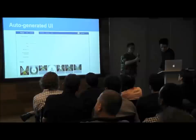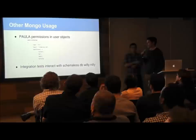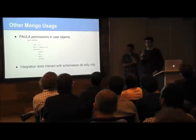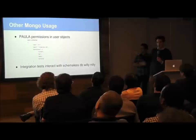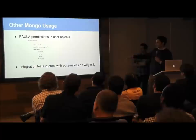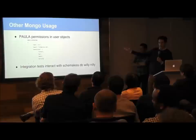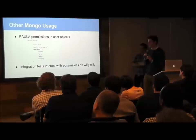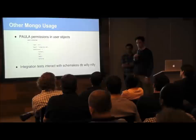Two more cool use cases we found for Mongo. Paula is our internal management system, but we don't want every person in our organization to access every part — some parts are only accessible to admins, some only to developers. We have a users collection for who has access to Paula, and we use Mongo's push and pop on arrays to manage permissions. Every time a request comes into Paula, we check whether the logged-in user has permission to access that part.